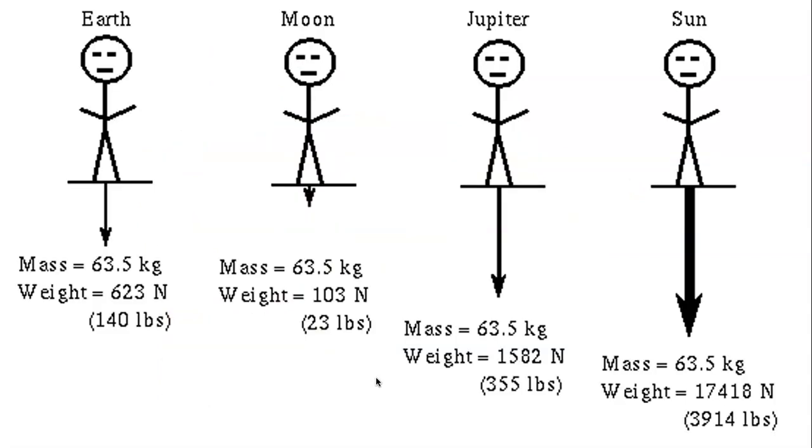If we take a look here at the same stick man who has the same mass of 63 and a half kilograms, or 140 pounds, when we find him on Earth, you can see that throughout Earth, Moon, Jupiter, and the Sun, his mass of 63 and a half kilograms stays the same. However, depending on the gravity, as we know Earth, Moon, Jupiter, and Sun all have differing gravity, where the Moon has less gravity than Earth, and Jupiter and Sun have more gravity than the Earth, we can see that the weight changes.